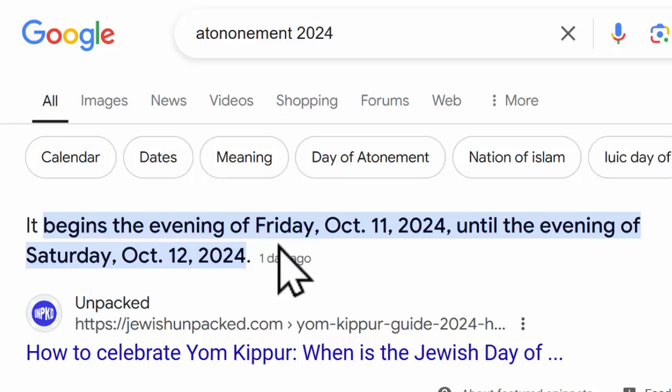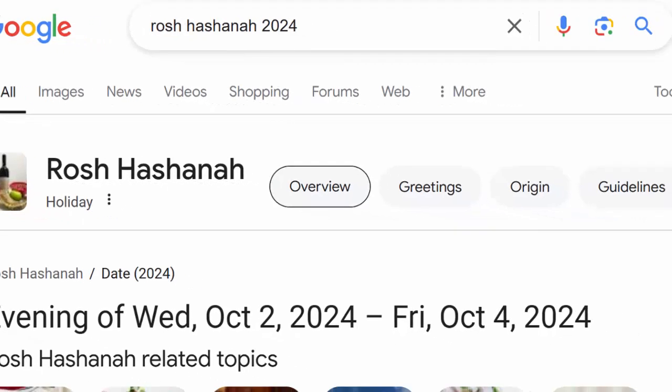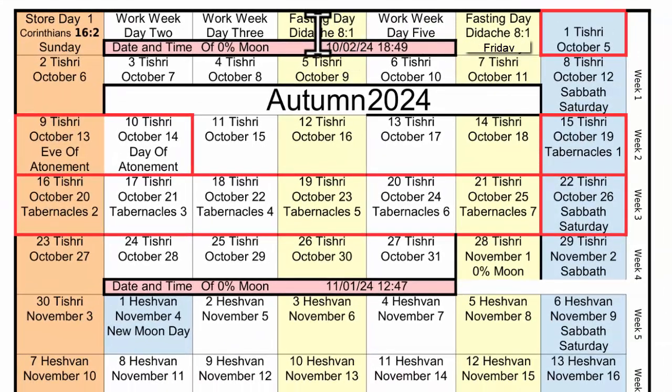We see they have atonement beginning on October 11th and ending on October 12th. If you're wondering why that is, it's because they celebrated Rosh Hashanah from October 2nd to October 4th. So if you start on October 2nd, you would have the Memorial of Blowing of Trumpets day two, three, four, five, six, seven, eight, nine, ten. And so that's why they are starting a little bit early.